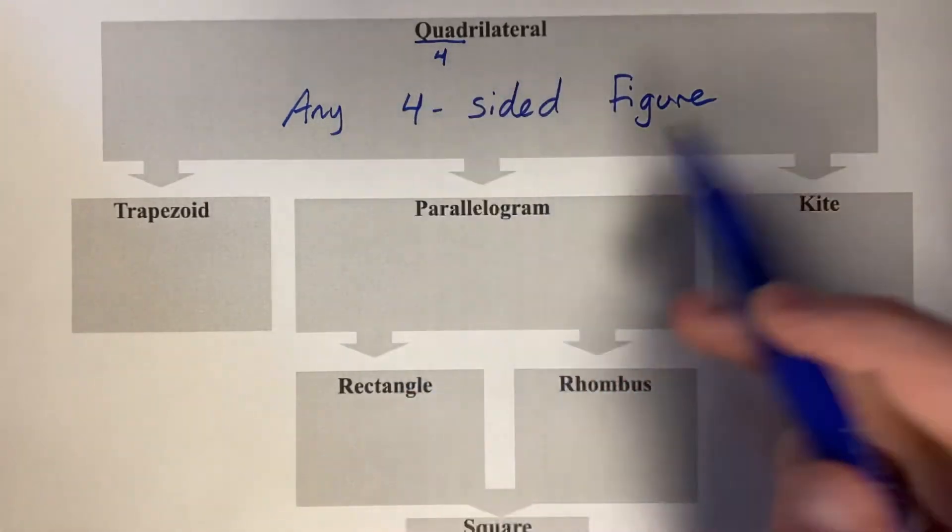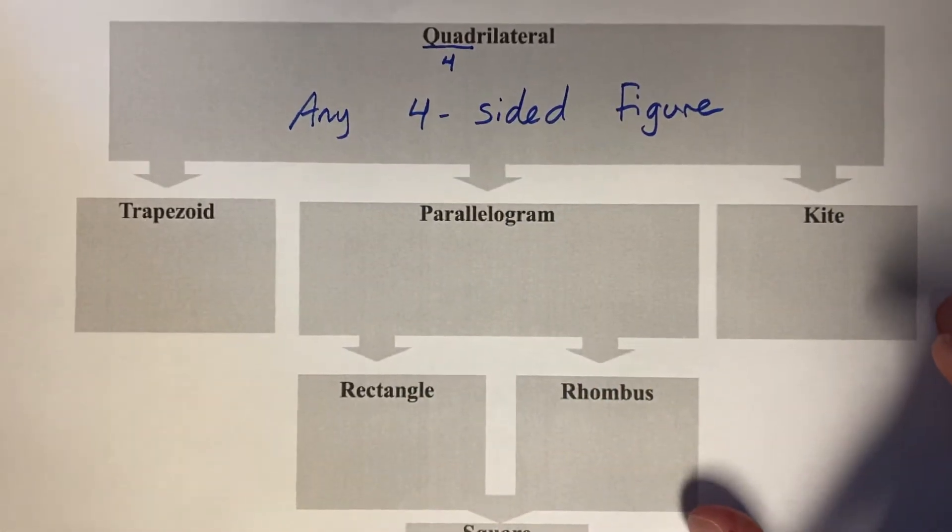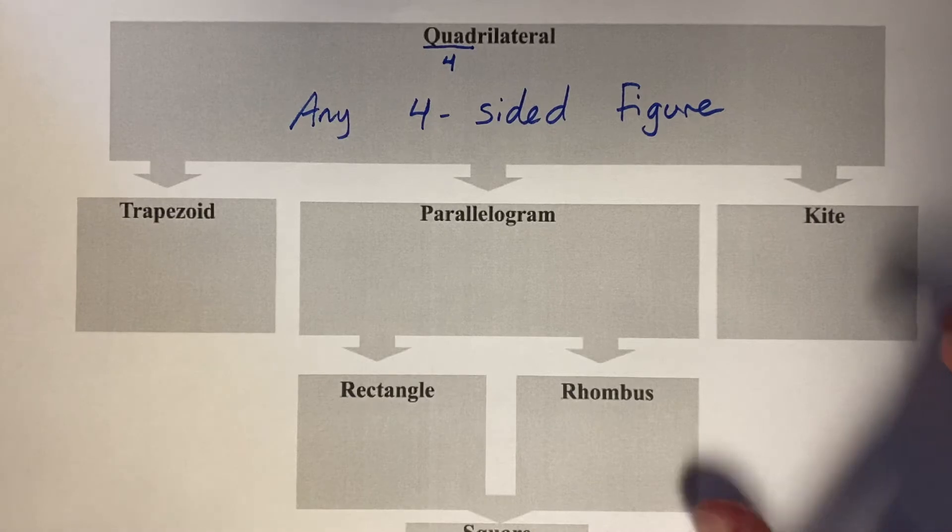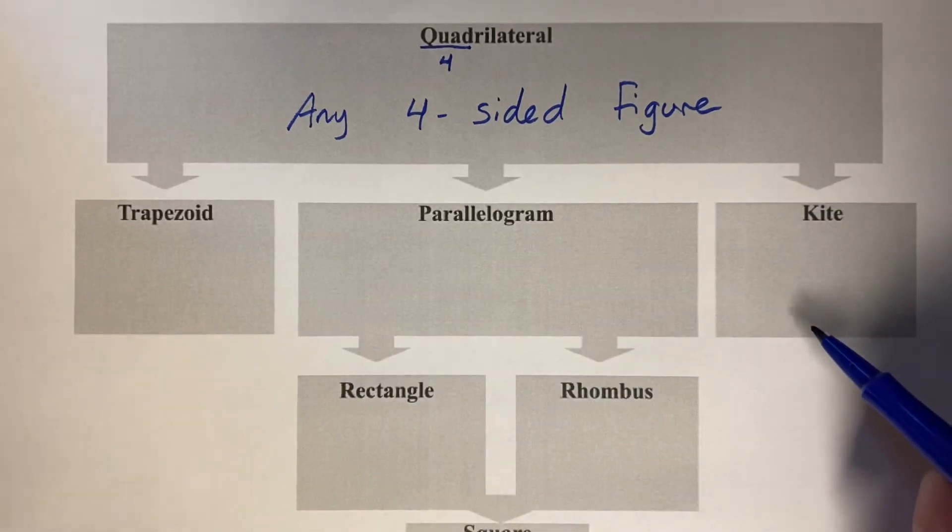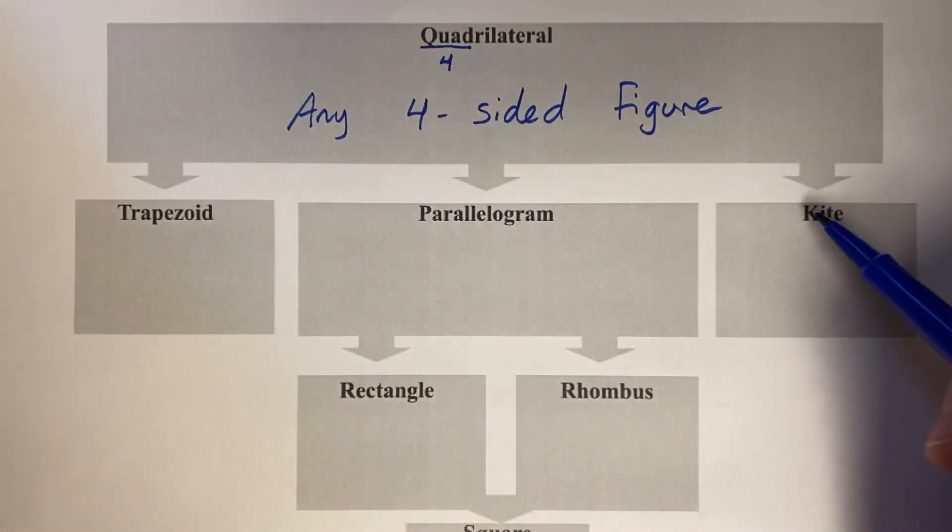This is kind of the big umbrella up at the top and then each of the other quadrilaterals fall into different categories based on different features. The first separation of features has to do with whether or not sides are parallel.